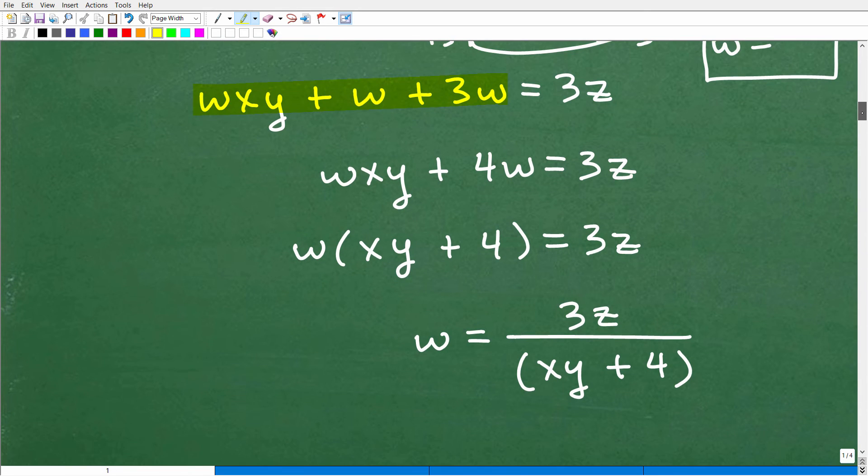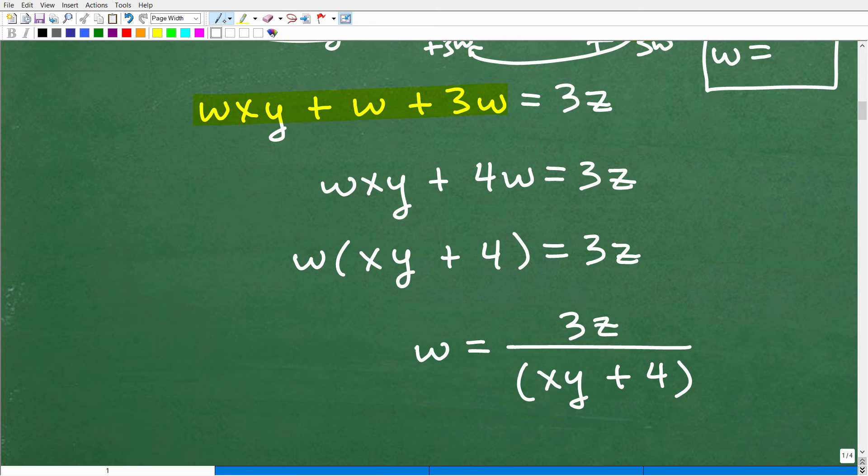So what are we doing from here? Well, we're looking to simplify anything we can simplify. And here I have 1W and I have 3W. So I can combine like terms. So this is 4W. So I have WXY plus 4W is equal to 3Z. We're getting closer.